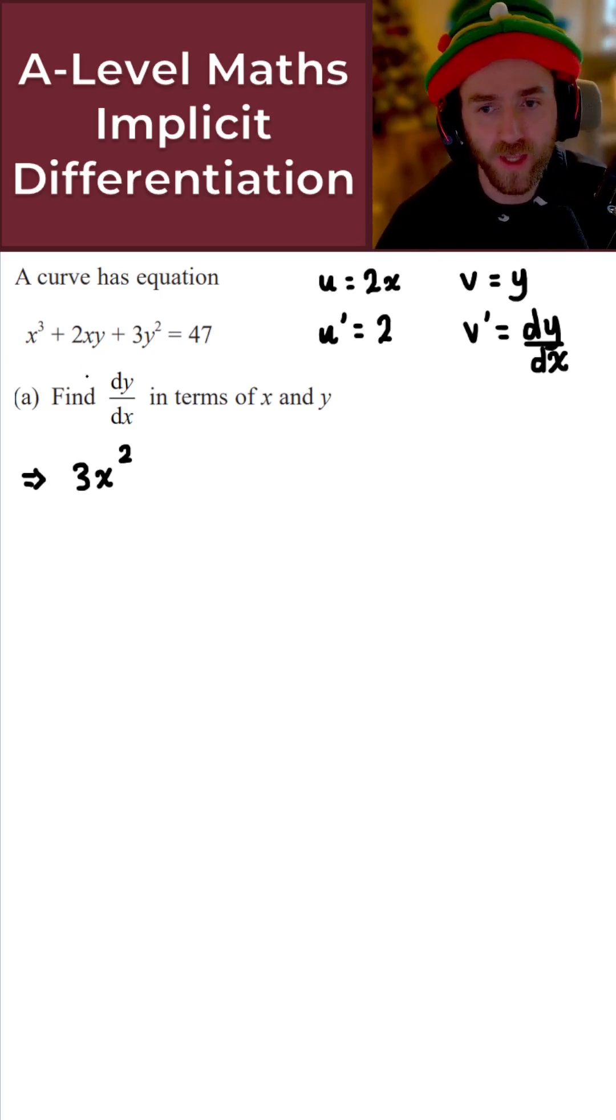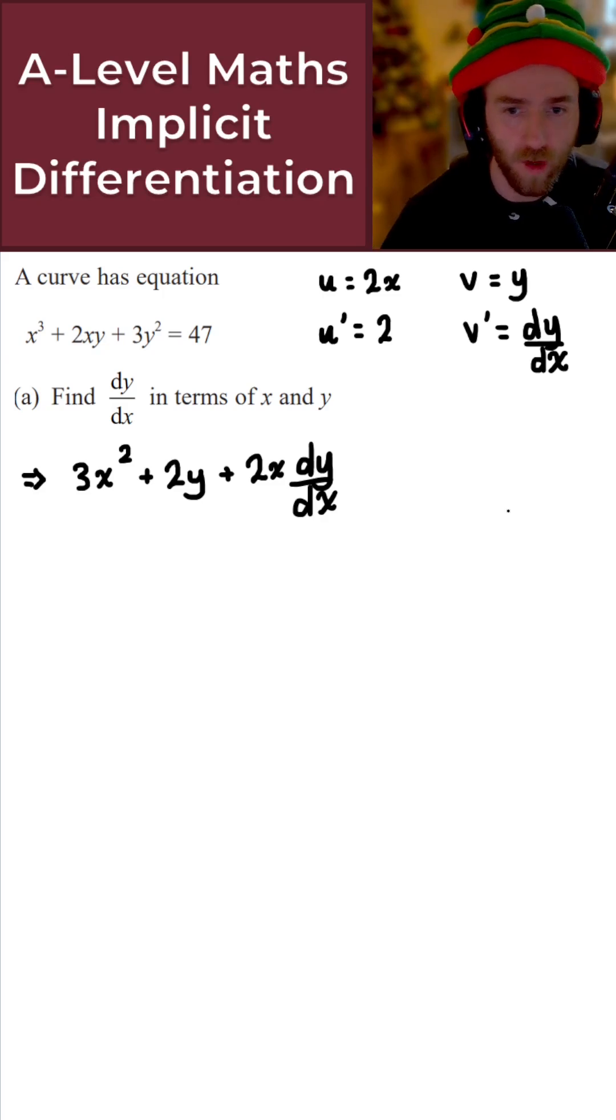For the second term then, once we differentiate that, what we get is 2x times dy by dx plus 2 times y. So we get 2y plus 2x dy by dx. That's the second term complete.